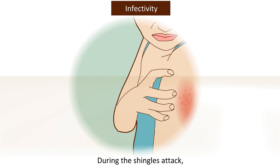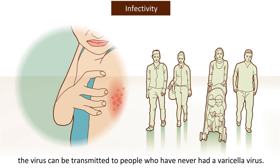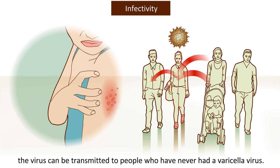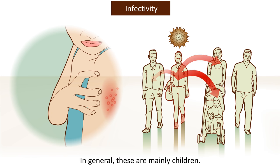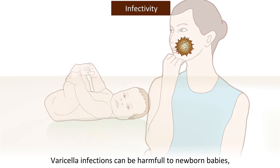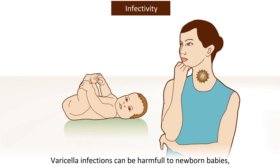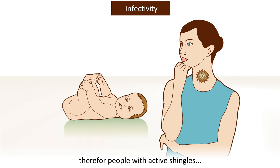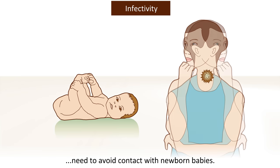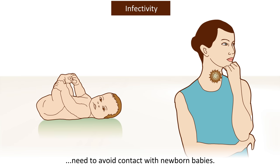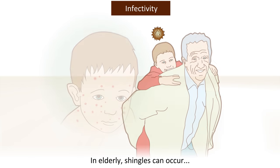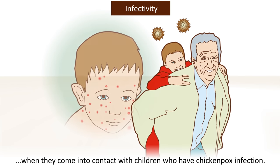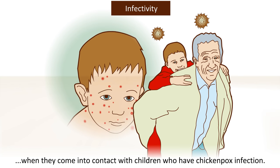During the shingles attack, especially when skin blisters are present, the virus can be transmitted to people who have never had a varicella virus — in general, these are mainly children. Varicella infections can be harmful to newborn babies, therefore people with active shingles need to avoid contact with newborn babies. In elderly, shingles can occur when they come in contact with children who have chickenpox infection.